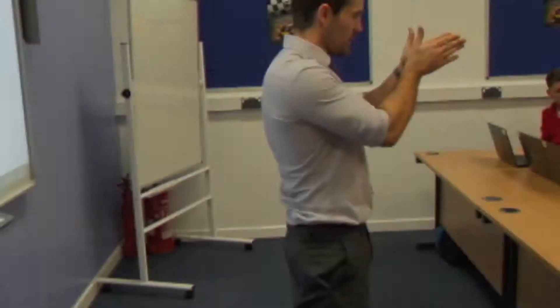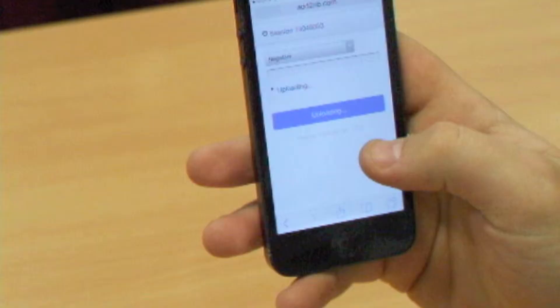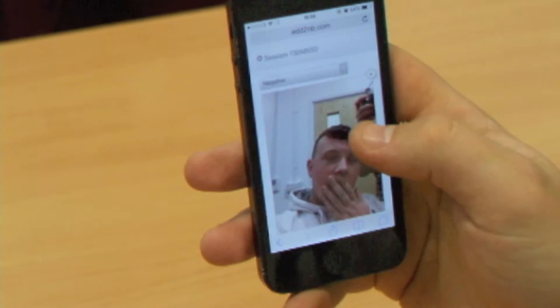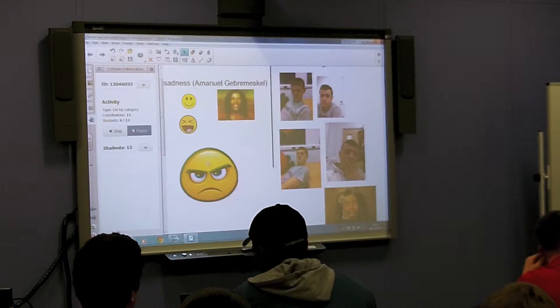I split the class into groups, ensuring they all had access to a computer and a phone. I then asked the groups to recreate or find images of positive and negative emotions. They uploaded these photos to the Smart Board through the Extreme Collaboration site. Once they did this, it allowed them to categorize them into positive and negative emotions.